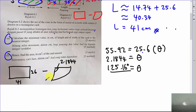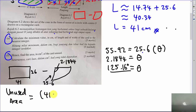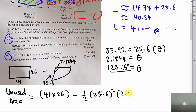The unused area = (41 × 26) − (½ × 25.6² × 2.1844). Note: the angle must be in radians for this formula. Calculating: 1066 − ½ × 655.36 × 2.1844 = unused area = 350.22 cm².